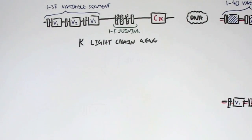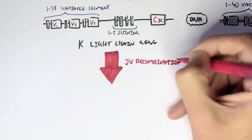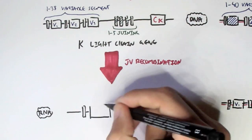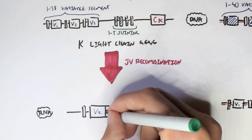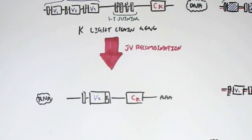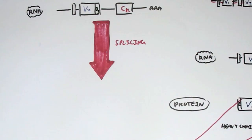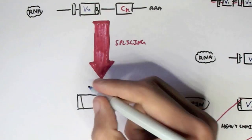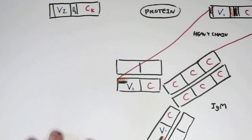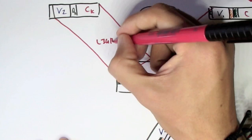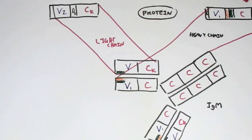The first process in kappa light chain recombination is VJ recombination, where the joining region binds to one of the variable regions. In this case, variable segment 2 binds to joining segment 3 (J3, not D3). This RNA goes through splicing to remove introns, producing mRNA and a protein consisting of V2, J3, and the kappa constant region — forming the light chain of the IgM antibody.